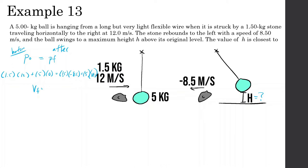So 1.5 times 12, plus 1.5 times 8.5, and divide that by 5. We should see that the ball is going to be moving at around 6.15 meters per second after they hit.